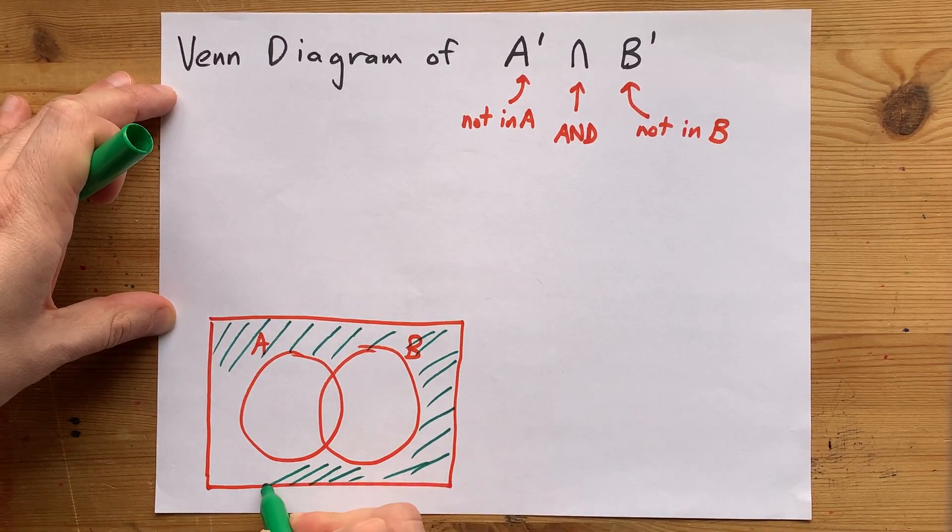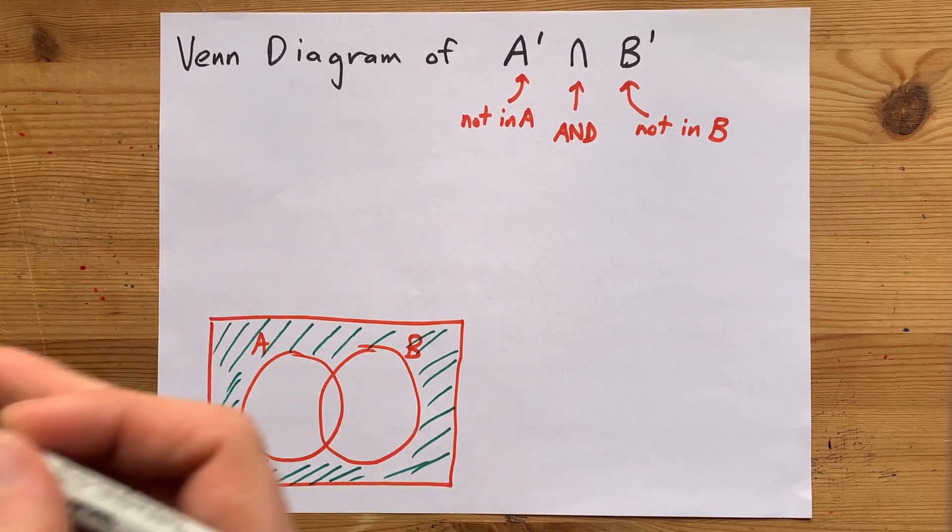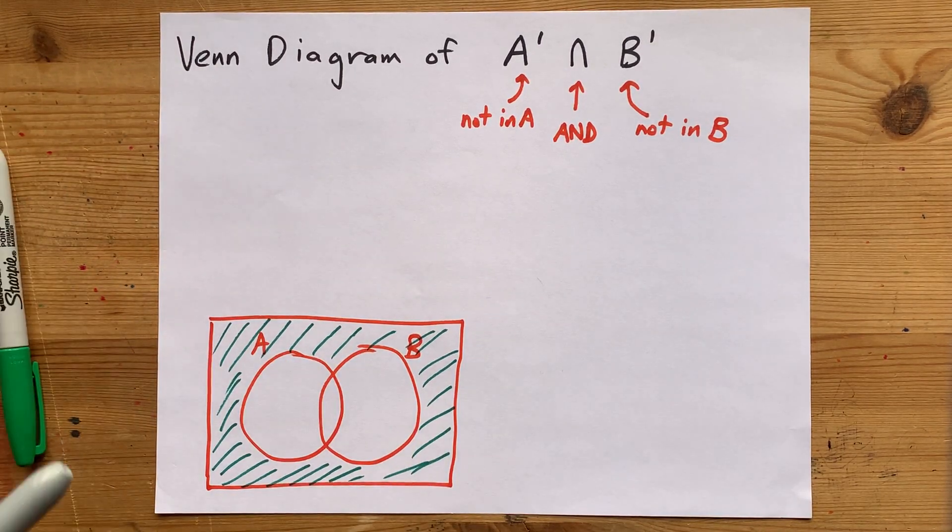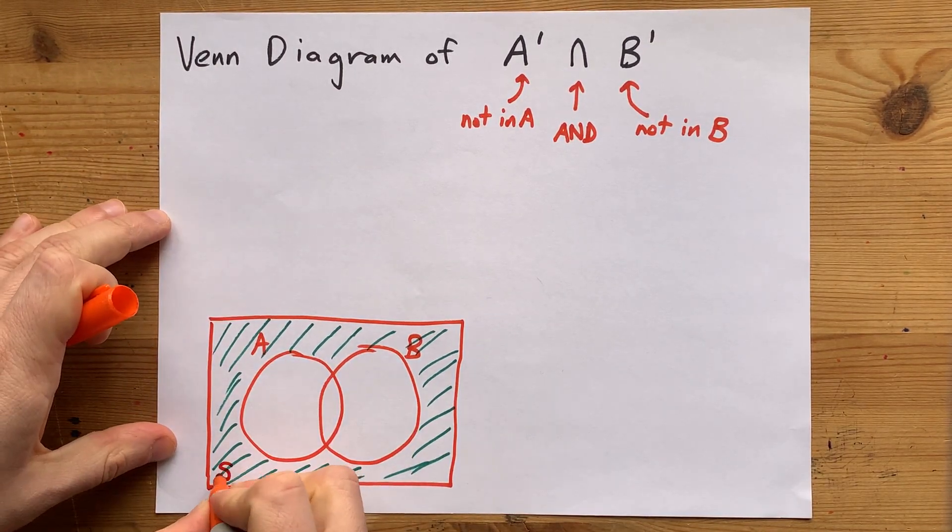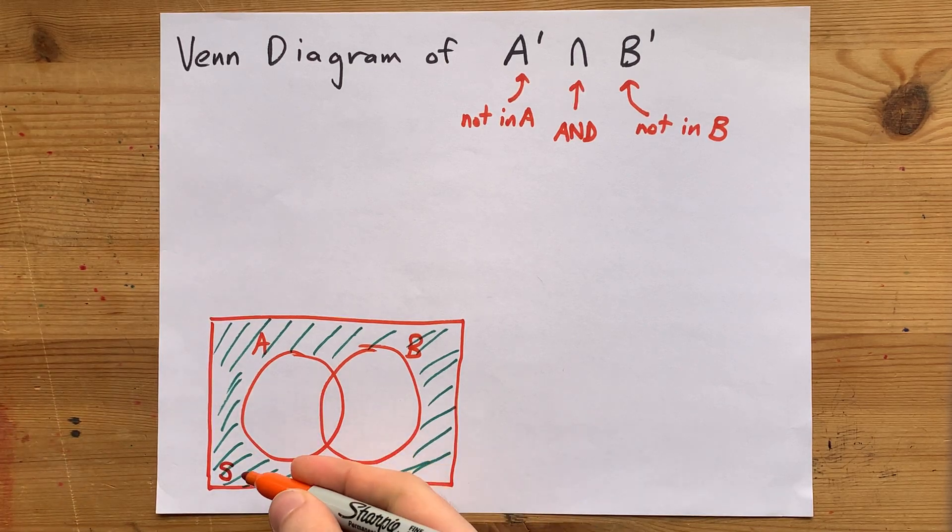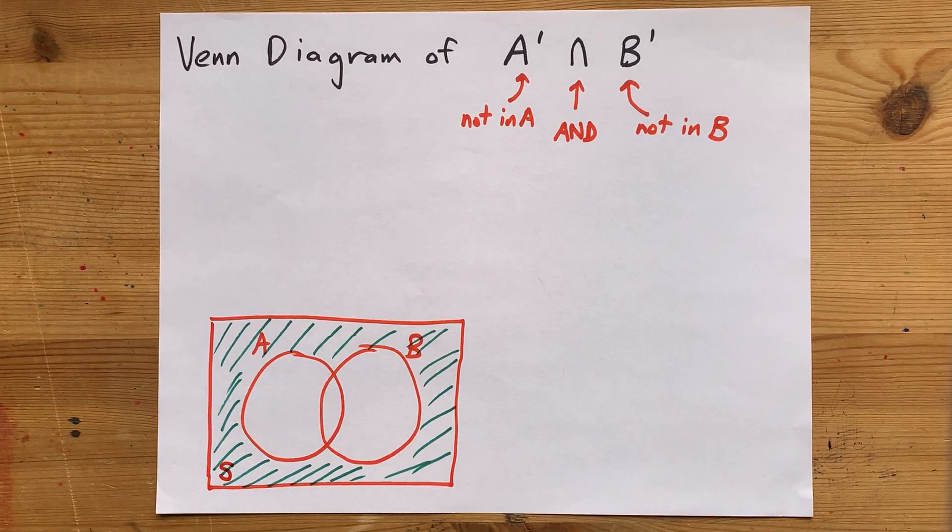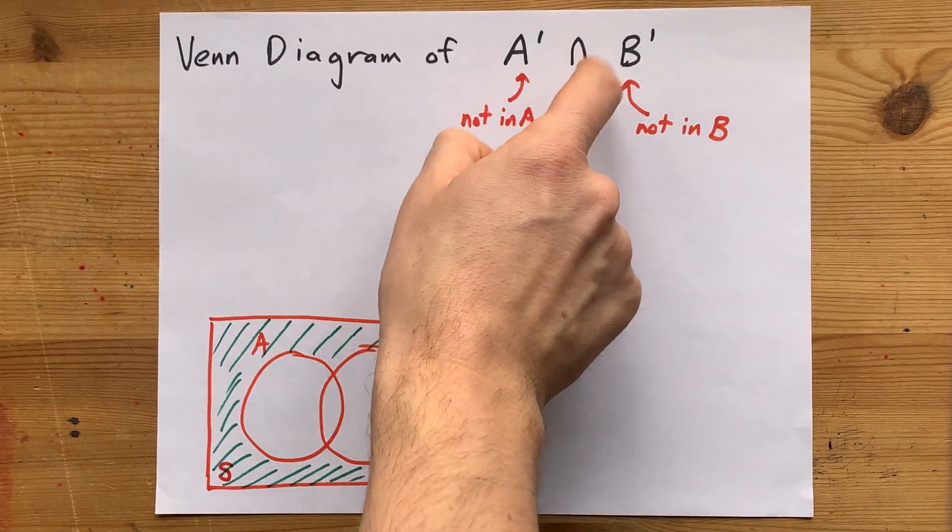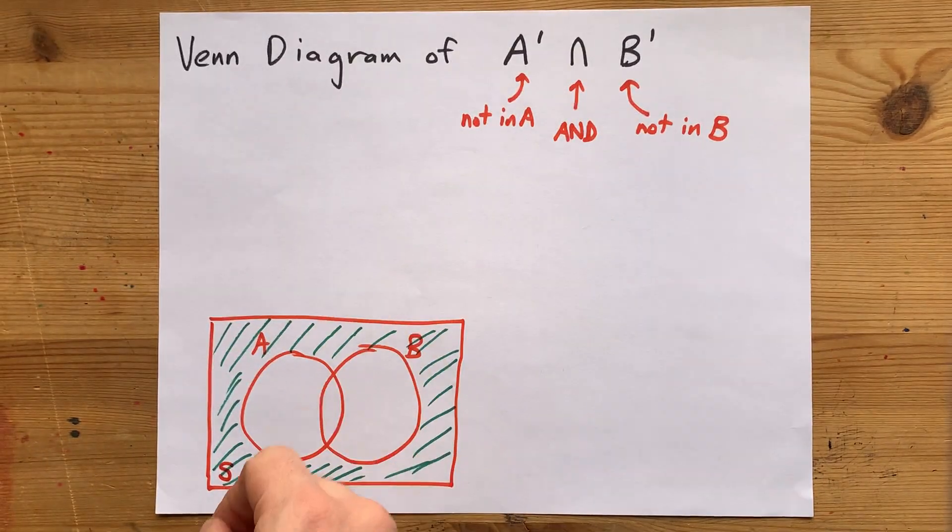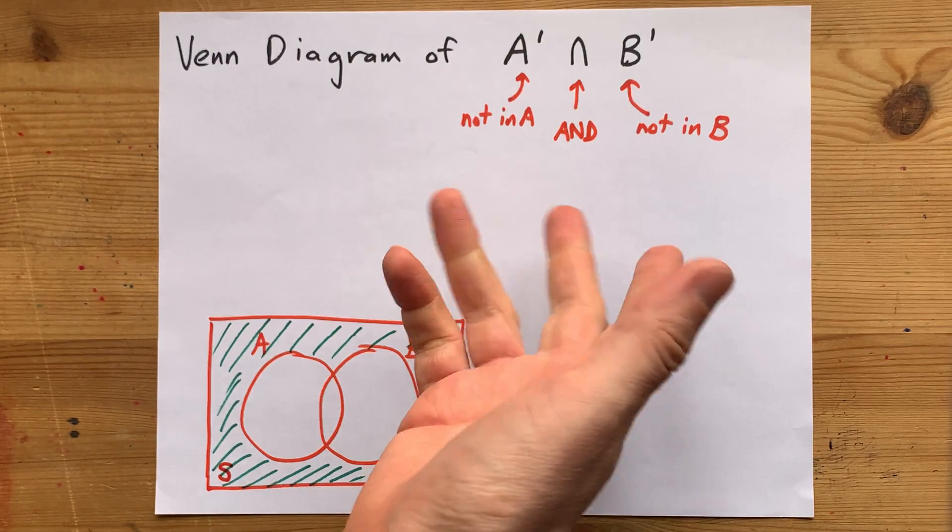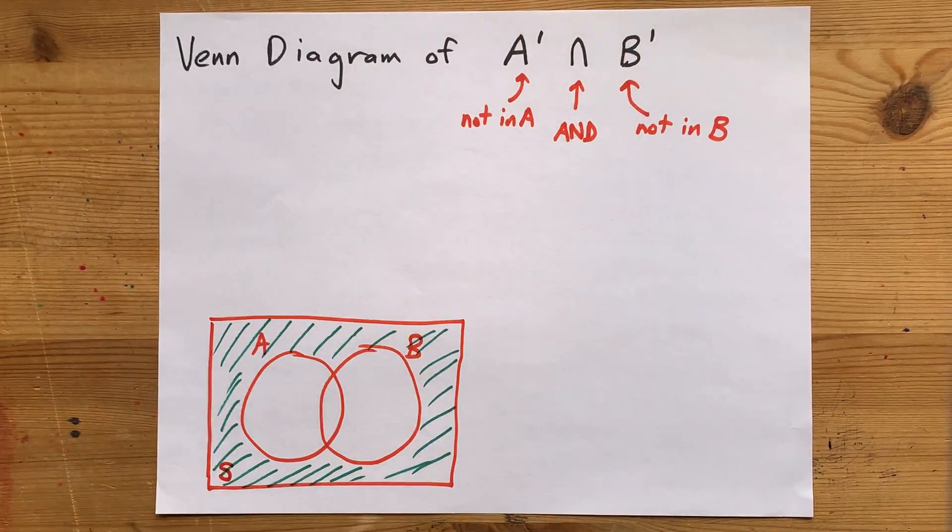Now, I should have labeled that outer portion the way I shaded A and B. Most teachers will label this as S for sample space, but some teachers will do U for universe. Not to be confused with U for union, which isn't here yet, until I teach you one other way you can deal with these complements.